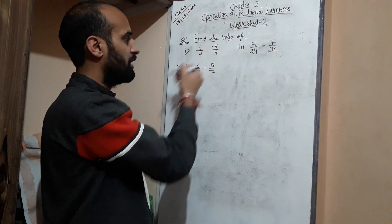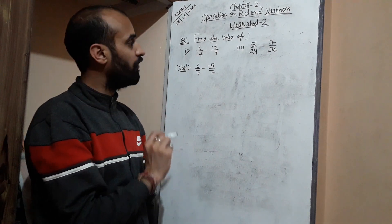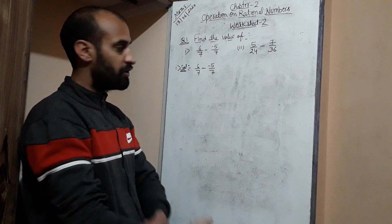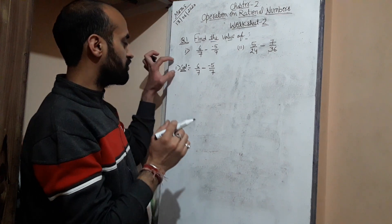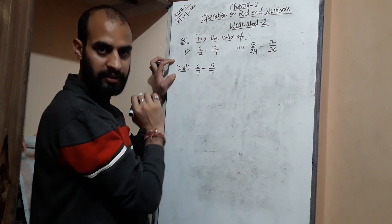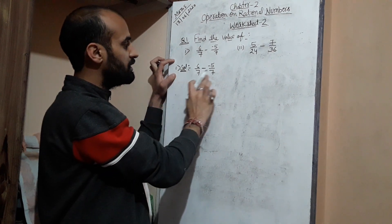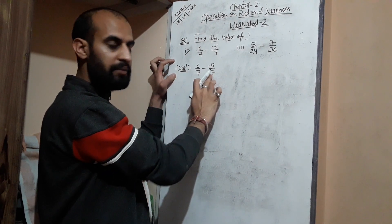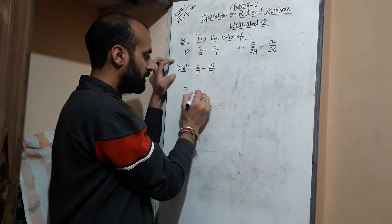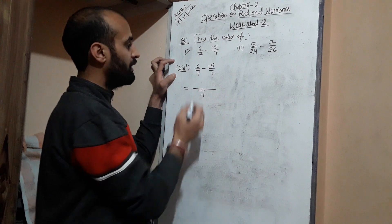The first is 6/7 minus (-5/7). In this case, you can see the first question I'm taking is 6/7 minus (-5/7). In both cases the denominator is the same. If we have a common denominator, then we can write simply 7, and what is left in the numerator, that we need to subtract.